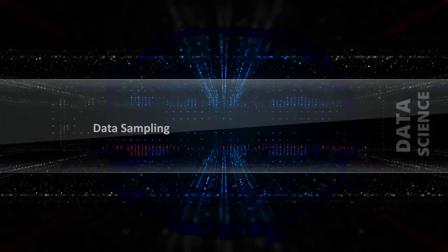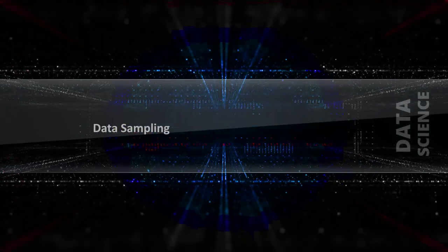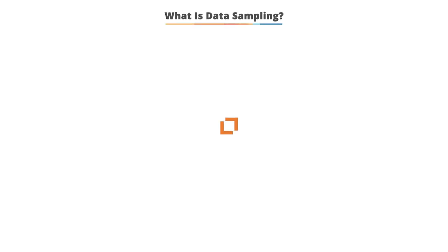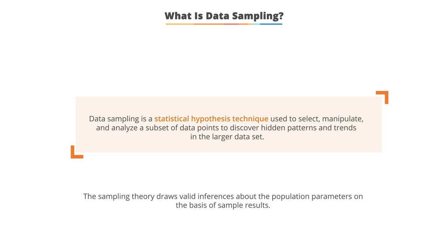Data sampling is a statistical hypothesis technique used to select, manipulate, and analyze a subset of data to discover hidden patterns and trends in a larger data set. The sampling theory can draw valid inferences about the population parameters on the basis of the sample results that we've analyzed.